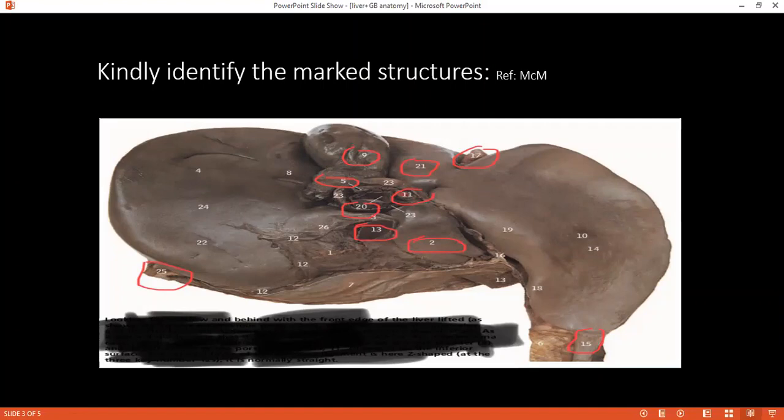Tell me about the blood supply of the liver. Liver has dual blood supply. Eighty percent is from portal vein and twenty percent is from hepatic artery. Which is a branch of? It is a branch of hepatic artery proper, which is branch of common hepatic artery from the celiac trunk. And the venous drainage goes into? Venous drainage via hepatic veins. It goes to inferior vena cava.